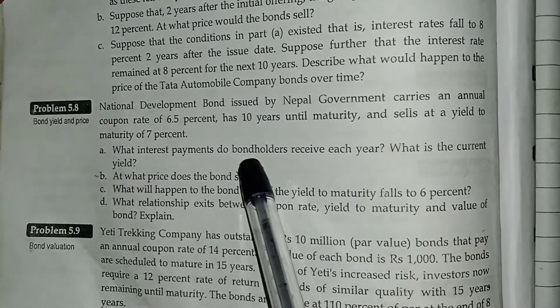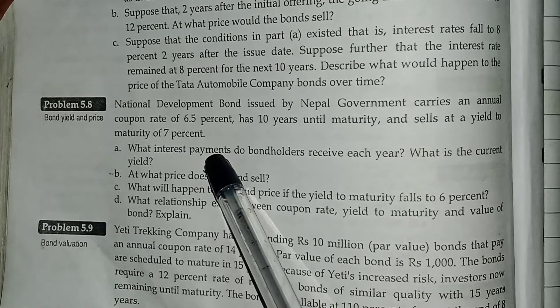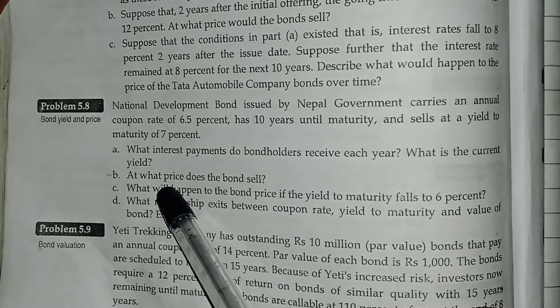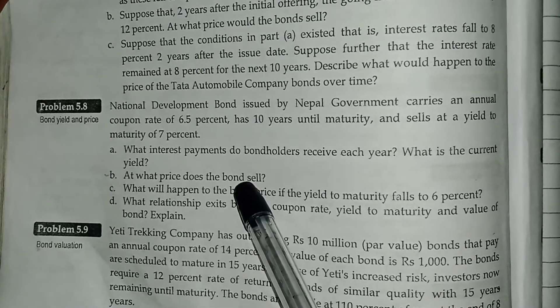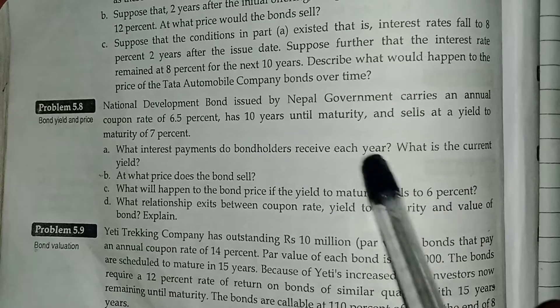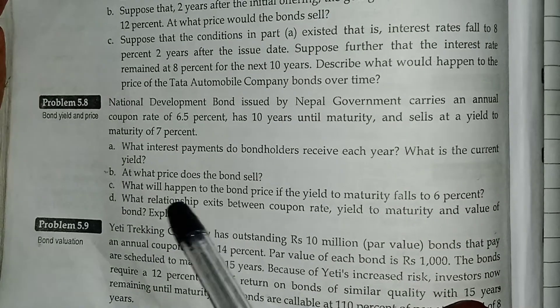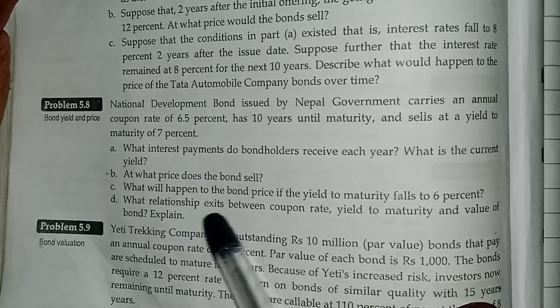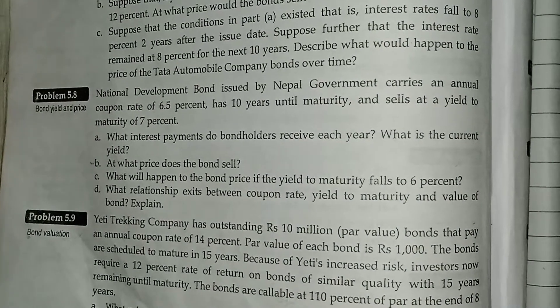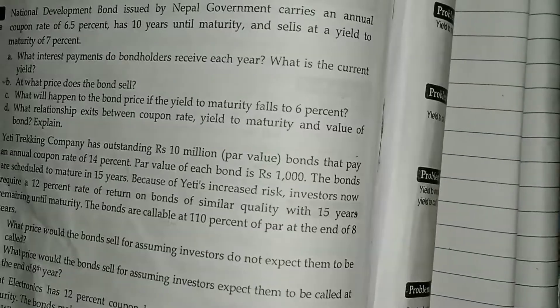The questions are: What interest payments do bondholders receive each year? What is the current yield? What price does the bond sell? What will happen to bond price if the YTM falls to 6%? What relationship exists between coupon rate, YTM, and value of bond?